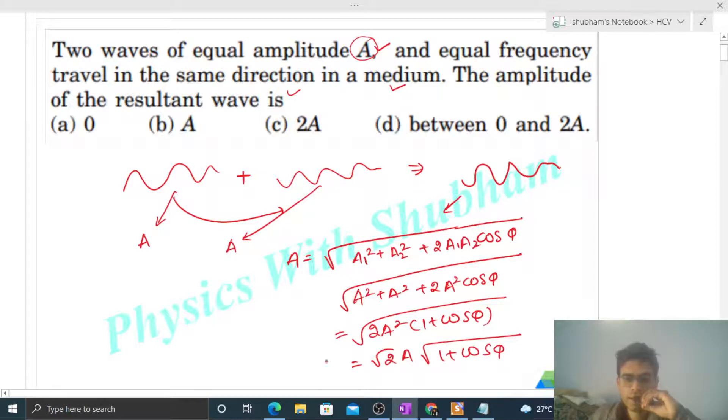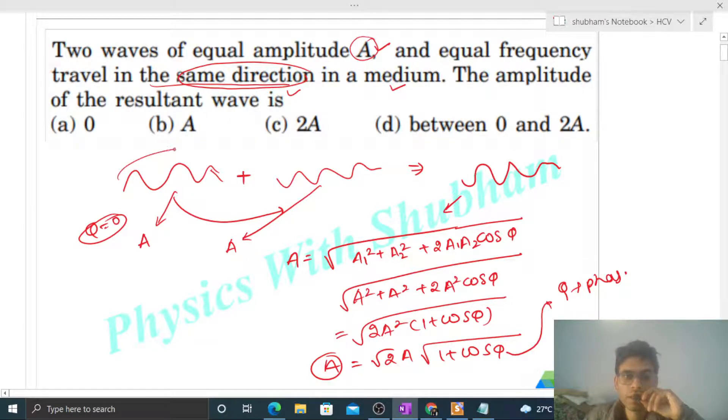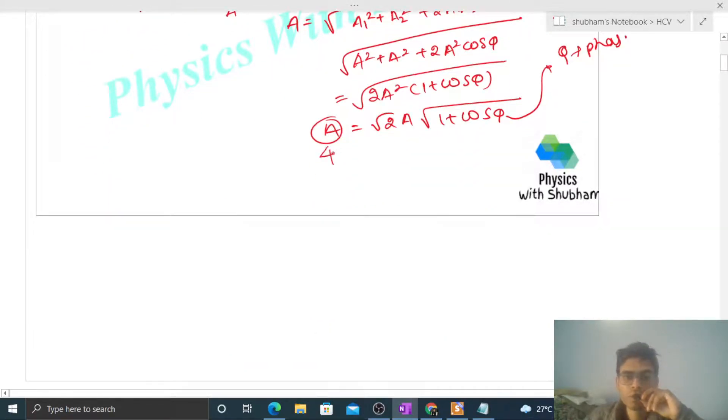Now, look, this amplitude can be anything. What is given? That the two waves are traveling in the same direction. And this phi is phase difference. So if the two waves are traveling in the same direction, doesn't mean that the phase difference is zero. Phase difference is a completely different thing. If the two waves are traveling in the same direction, phase difference between the two waves can be anything. Phase difference has no relation with traveling in the same direction. So we can say that this amplitude can be anything.